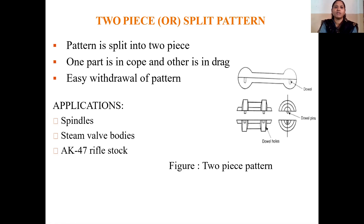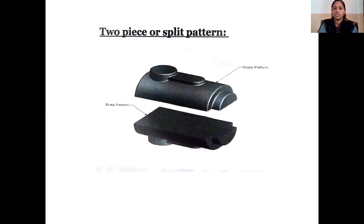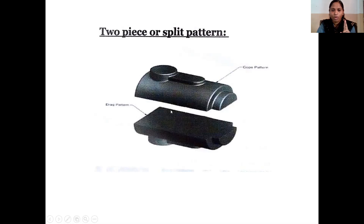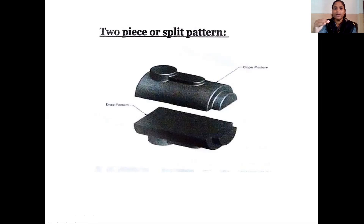This is the image of a two piece or split pattern. The pattern is split into two parts: one part is kept in the cope and the bottom part is kept in the drag, and these two patterns are separately molded. The surfaces of the cope side and drag side meet at the parting line — this is called the parting surface, with an upper parting surface and a lower parting surface.